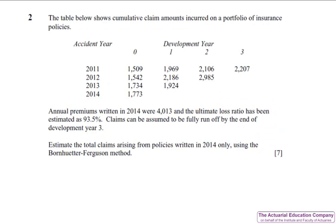Question two is on runoff triangles, and this time it's the Bornhutter-Ferguson method. And even more fantastically, we only have to apply this for one accident year. This should have been absolutely no problem whatsoever for well-prepared students. However, don't get caught out by the tiny twist at the end, because we're asked to estimate the total claims, and not the reserve.